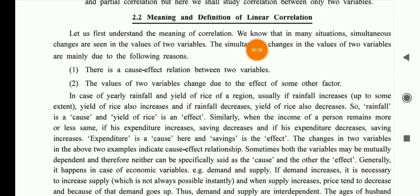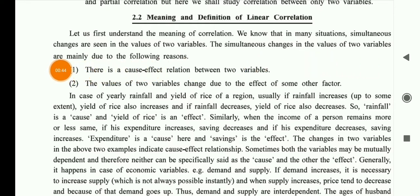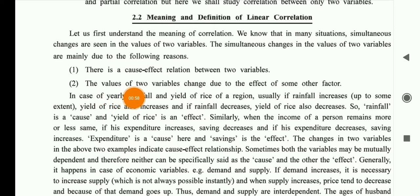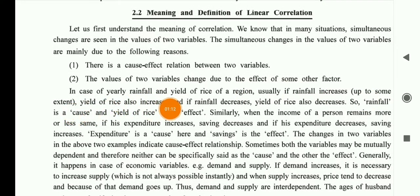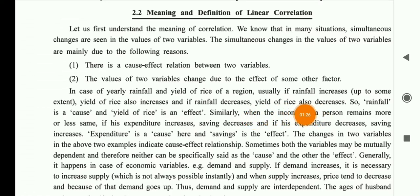Let us first understand the meaning of correlation. We know that in many situations, simultaneous changes are seen in the values of two variables. These simultaneous changes are mainly due to a cause-and-effect relationship between two variables. For example, in the case of yearly rainfall and yield of rice — if rainfall increases, yield of rice also increases, and if rainfall decreases, yield of rice also decreases. So rainfall is the cause and yield of rice is the effect.